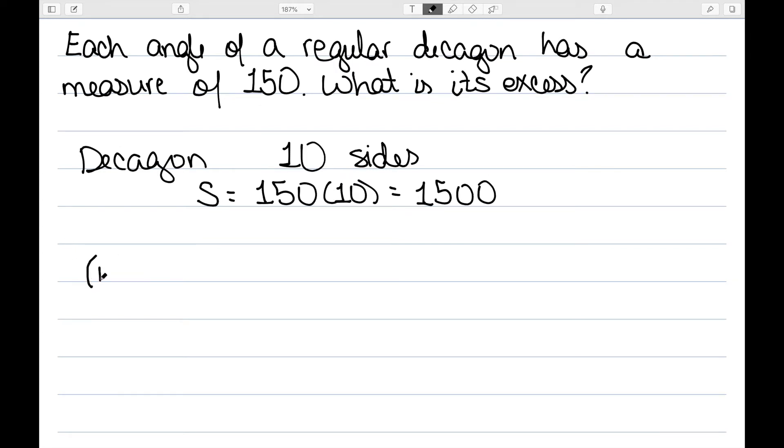Normally, my angle sum formula is n minus two times 180. In this case, n is 10. So this will be eight times 180, which is 1440. So the excess of my decagon is 1500 minus 1440, which gives me an excess of 60.